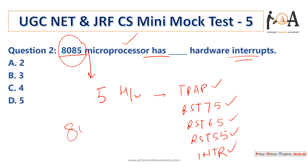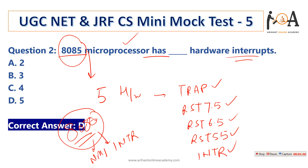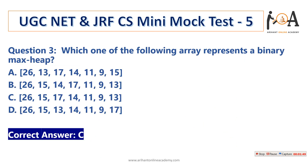If we talk about the 8086 microprocessor, it has 2 hardware interrupts: NMI and INTR. But in this question, 8085 is asked, so the answer is 5 hardware interrupts. Keep note of 8086 as well because they may ask, and you need to answer 2 in that scenario. So option D is the correct answer for question number 2.